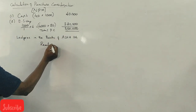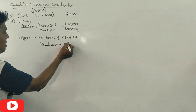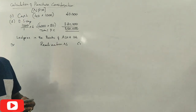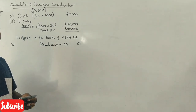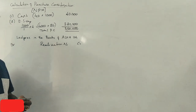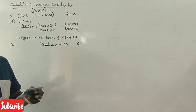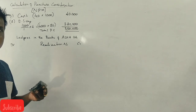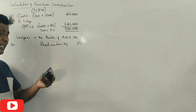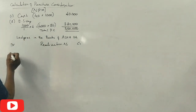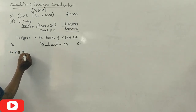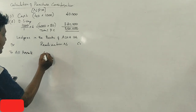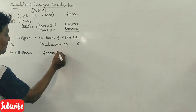Let us prepare the Realization Account. Whenever you are preparing the realization account, please don't look at the adjustments first. Usha is purchasing all the assets of Asha. So the total assets of Asha company, including cash, amount to Rs.4,30,000. All assets are debited at Rs.4,30,000.